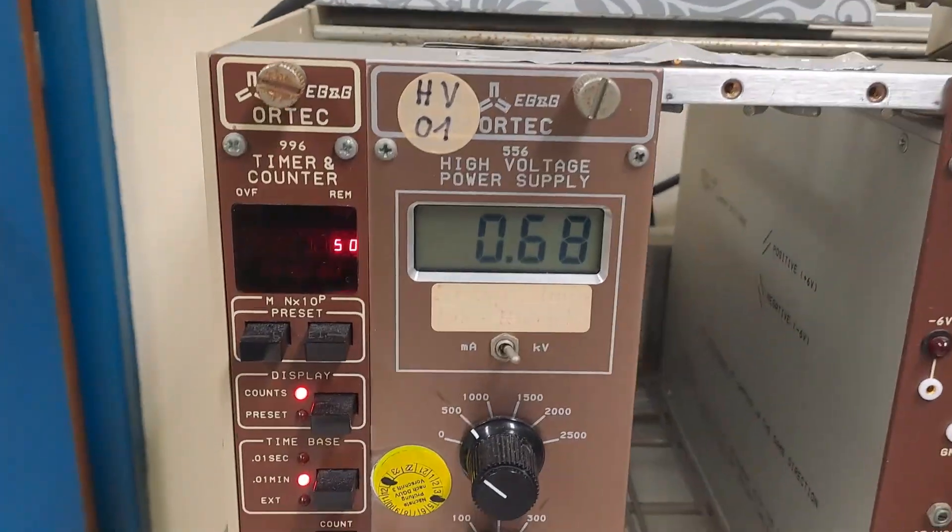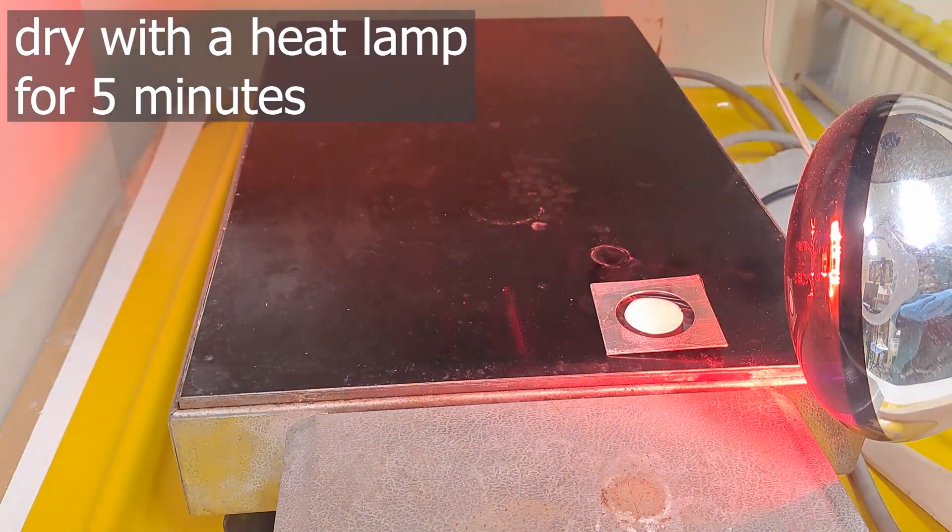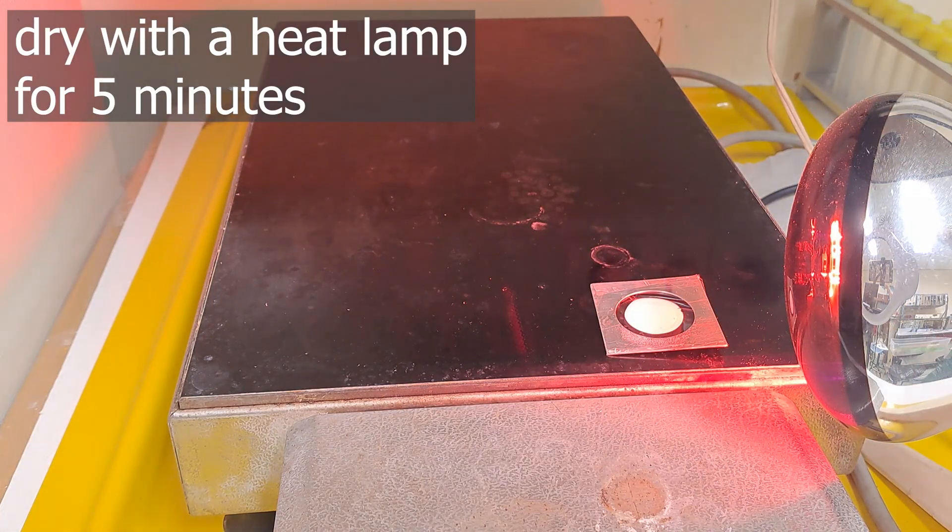Measurement. Measure the wet sample for two minutes. Dry the sample under a heat lamp for about five minutes and measure it again for yet another two minutes.